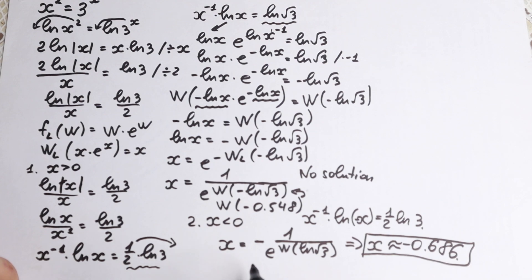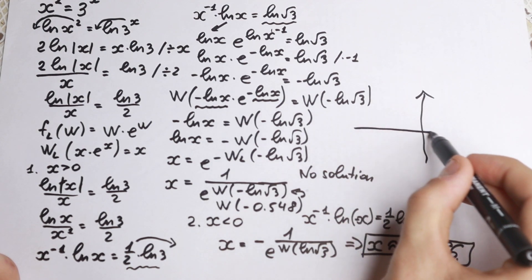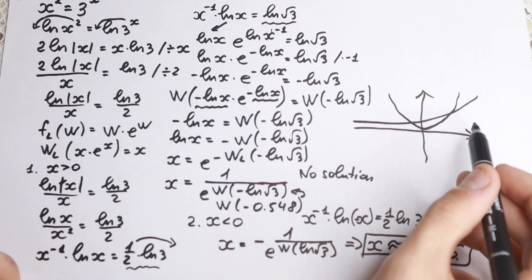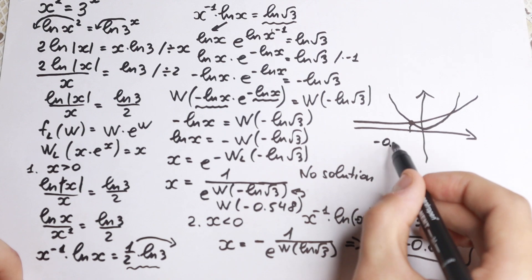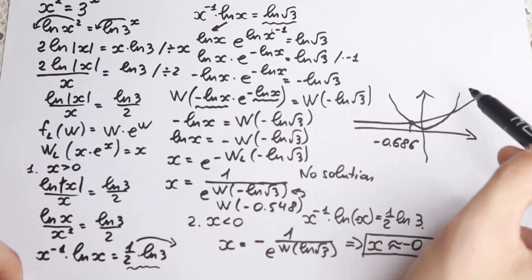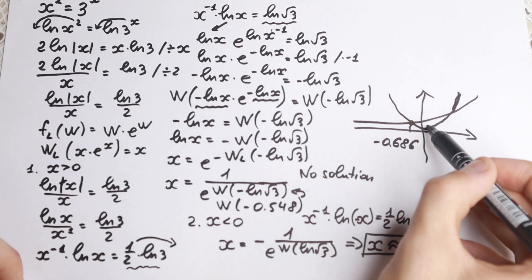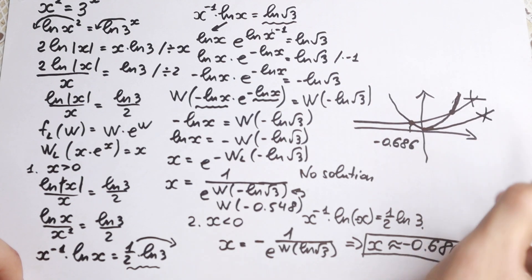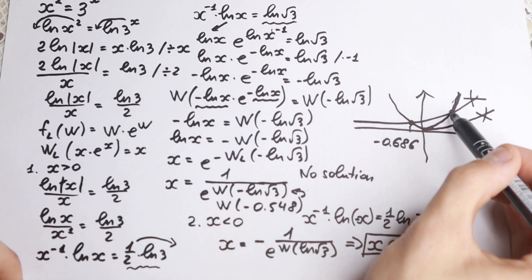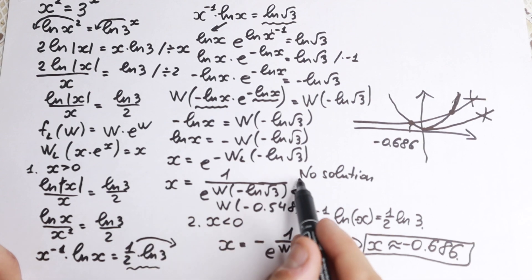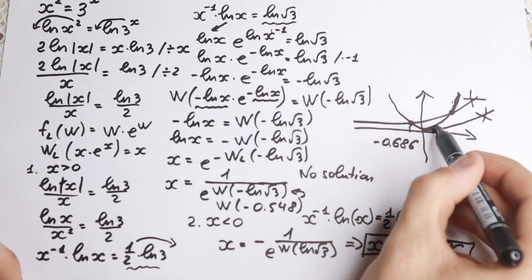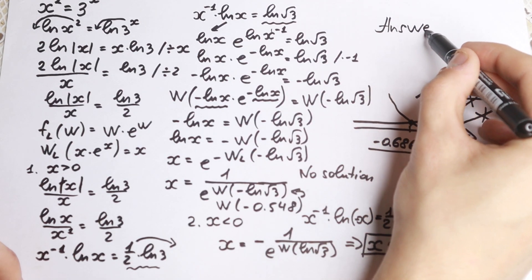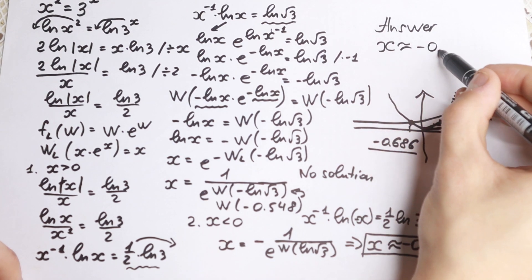Let's draw a quick graph to verify. We have the exponential function 3 to the x and a parabola x squared. They have a point of intersection at approximately x equals minus 0.686. For positive x, the exponential curve lies below the parabola and does not intersect it, confirming no solution there. So this is the one and only real root. Our answer is x approximately equal to minus 0.686.